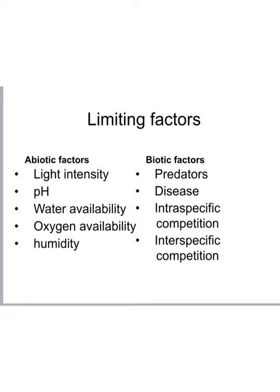Limiting factors. In theory, if all resources were in plentiful supply, population would continue to grow exponentially. However, this is rarely seen in nature. Instead, a short period of exponential growth occurs when conditions are ideal. Limiting factors prevent further growth of a population and in some cases cause it to decline. Examples include competition between organisms for resources, the buildup of toxic byproducts of metabolism, or disease. Limiting factors can be divided into abiotic and biotic factors. Abiotic factors are non-living factors that can limit population size — these could be temperature, light intensity, pH, availability of water, oxygen, or humidity.